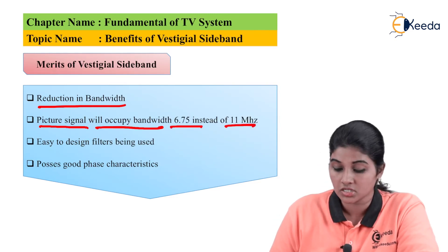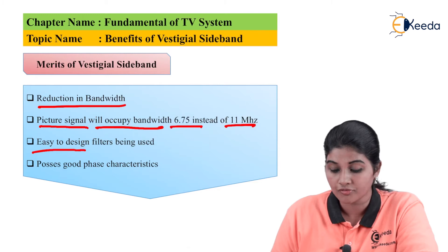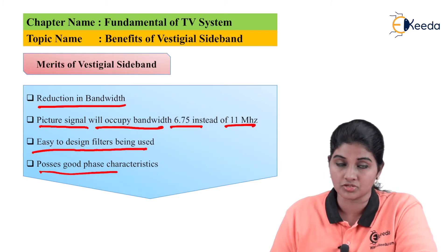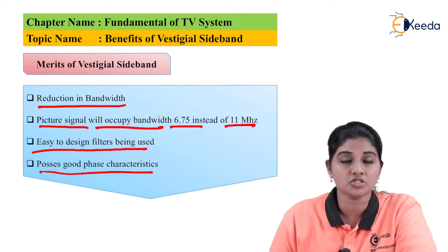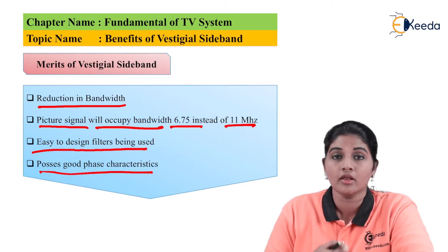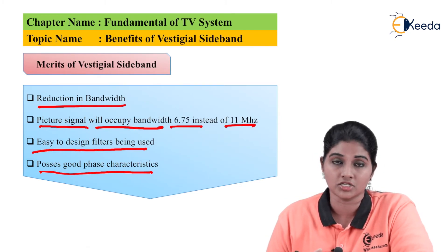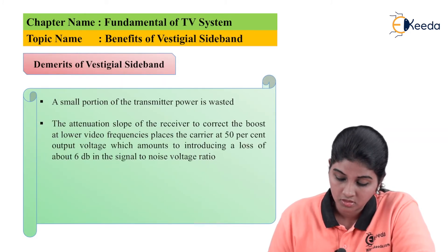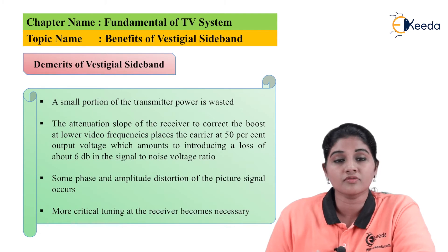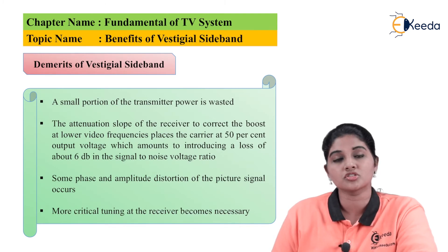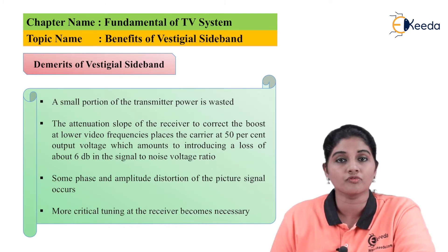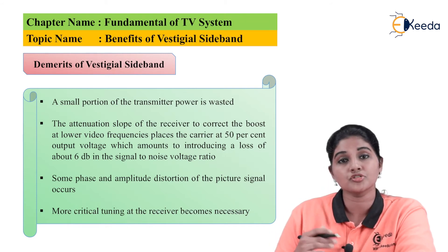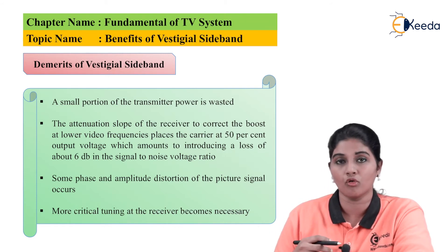The third advantage is that the design of the filter is very easy and it possesses good phase characteristics. There is one more important advantage of VSB: it provides good phase characteristics, and therefore it is possible to transmit the signal even at low frequency.